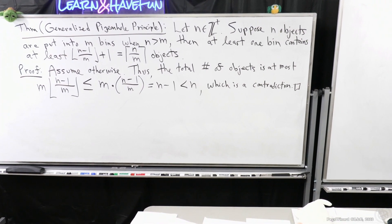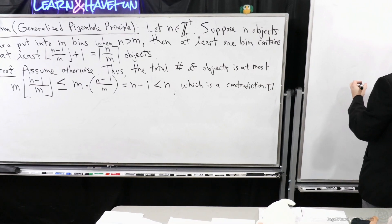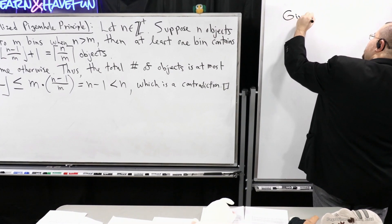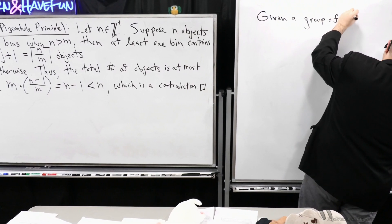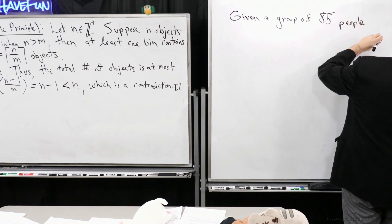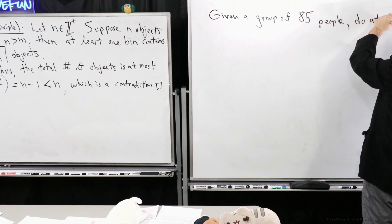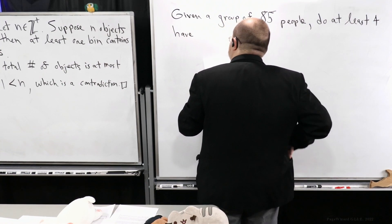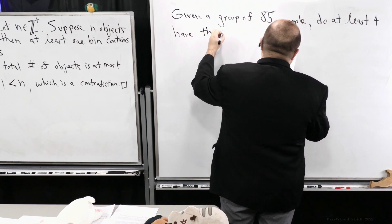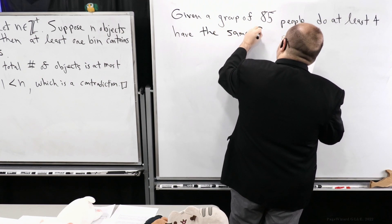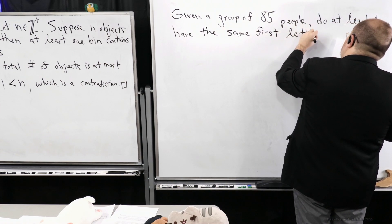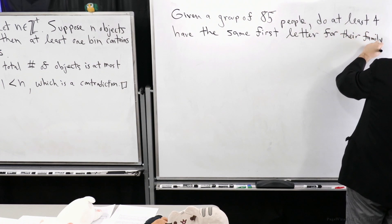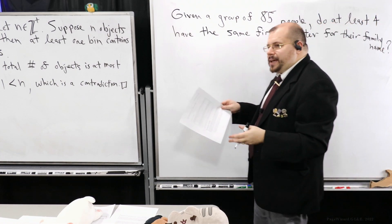So let's consider this example. We're going to do a very simple application of the generalized pigeonhole principle, because this is very often how you might use it. Given a group of 85 people, do at least 4 have the same first letter for their family name?